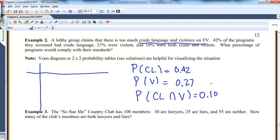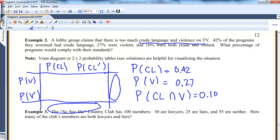This is probability of crude language and its complement, probability of violent and its complement. The numbers out here have to add up to 1, and the numbers up here have to add up to 1 because they're complements. So violent is 0.27, so not violent is 0.73. Crude language is 0.42, so not crude language is 0.58. And I have a piece in the middle - this is the intersection.